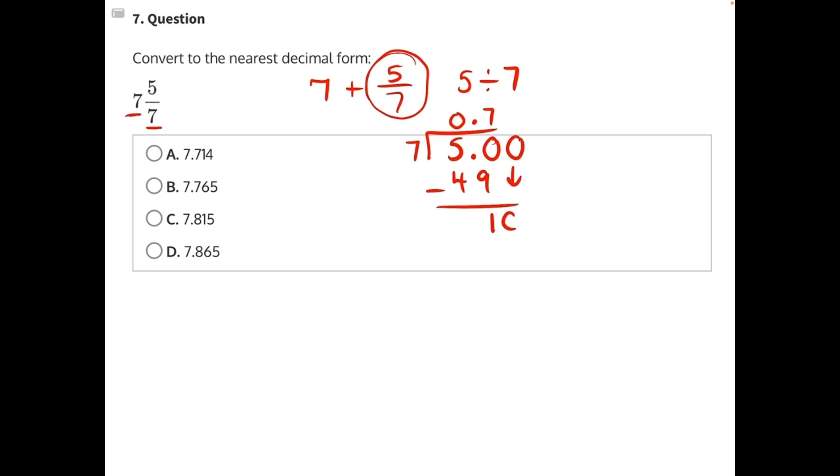Add another 0 and bring it down. 7 can go into 10 one time. And at this point, we could have already eliminated answer choice D and C for not having 0.7 as its first digit. So these two would cancel out.